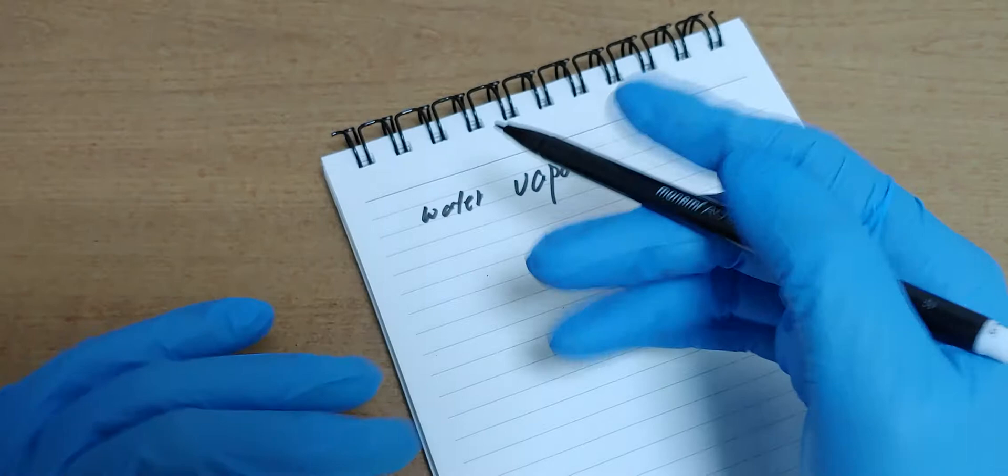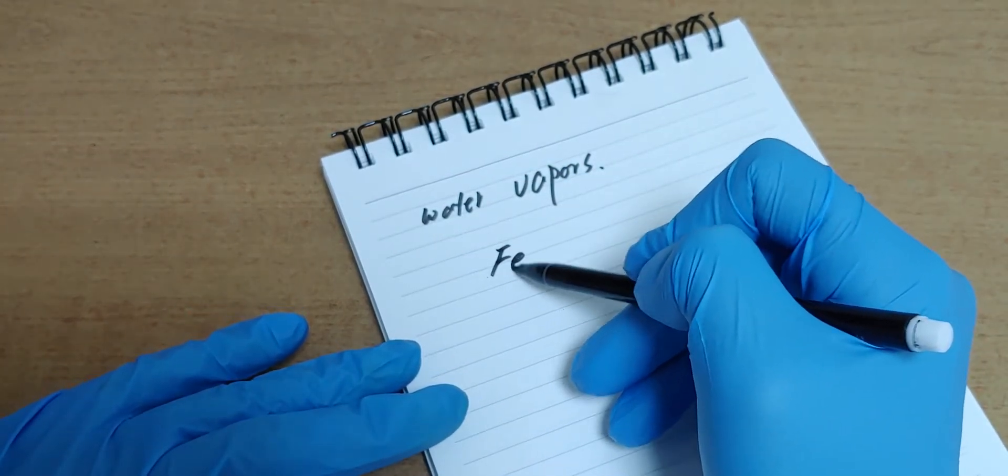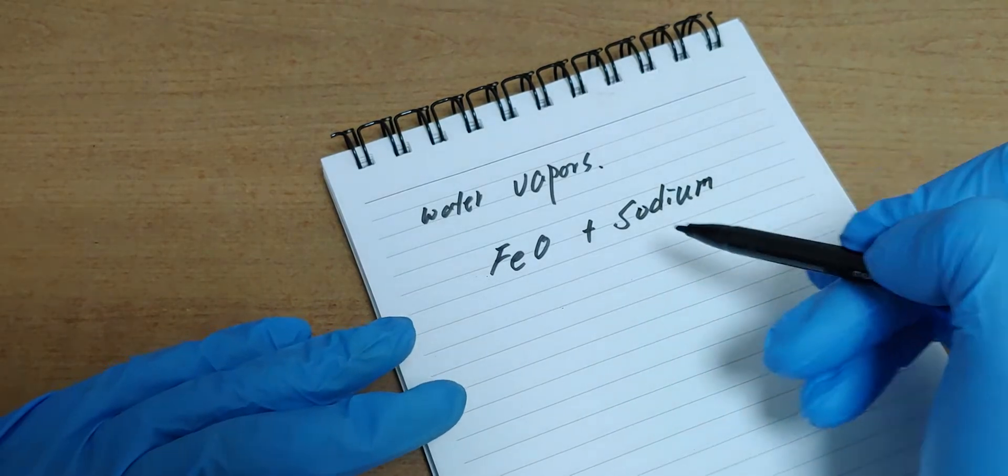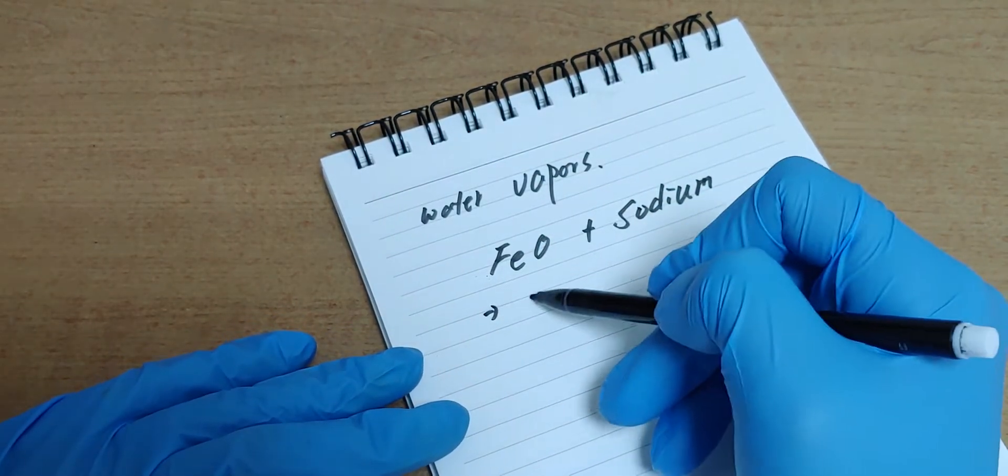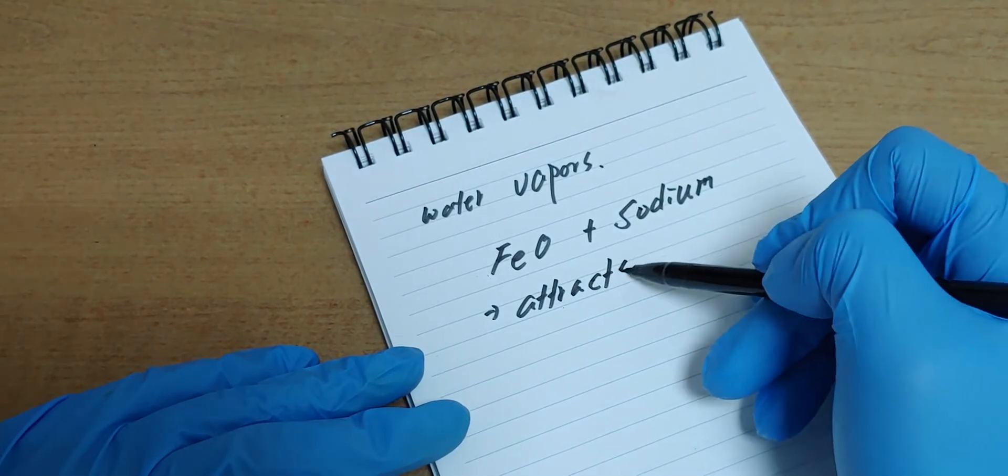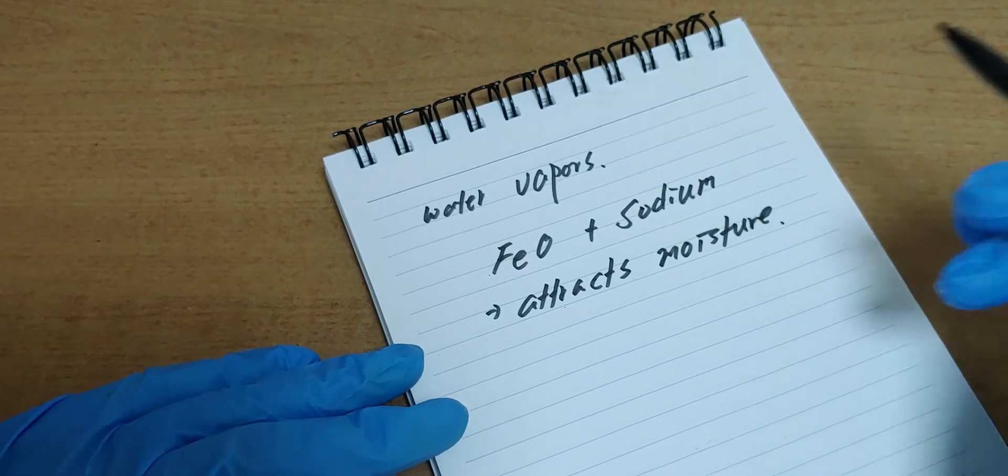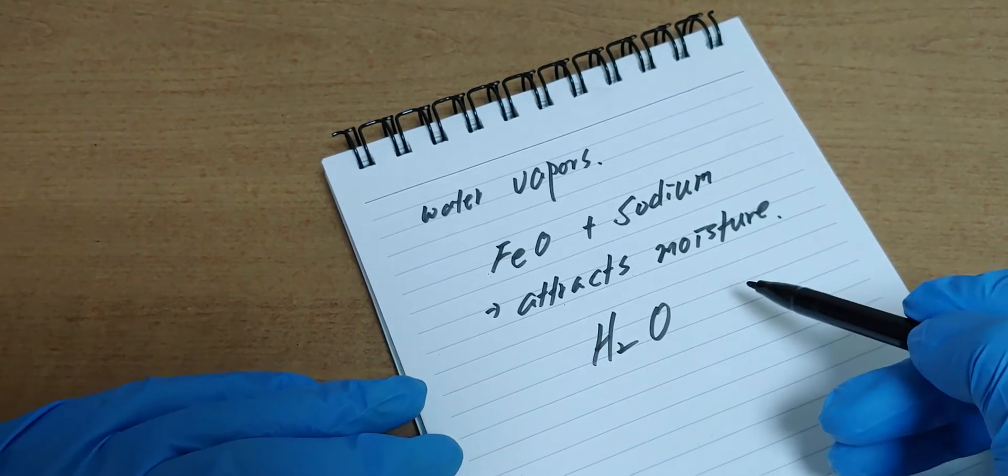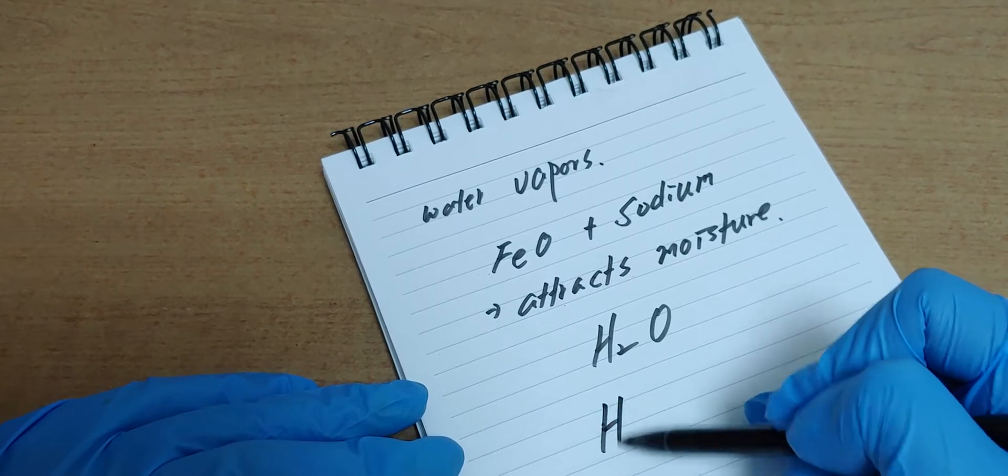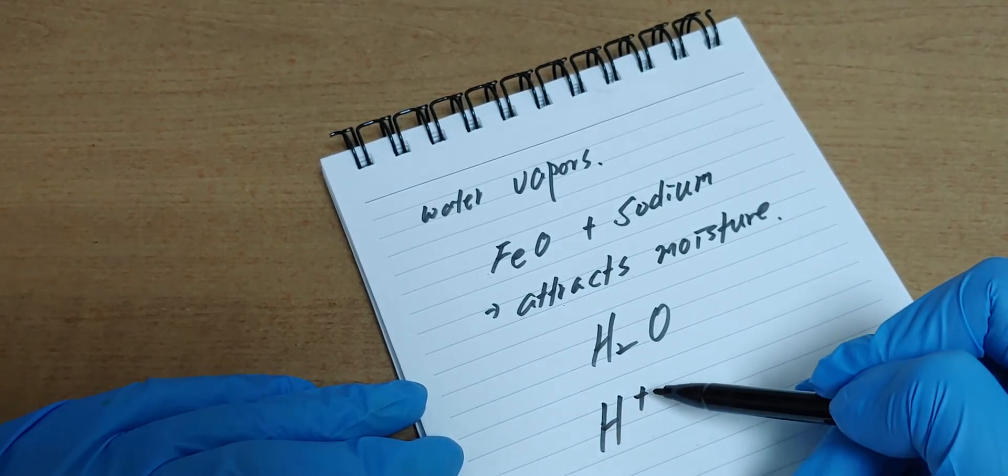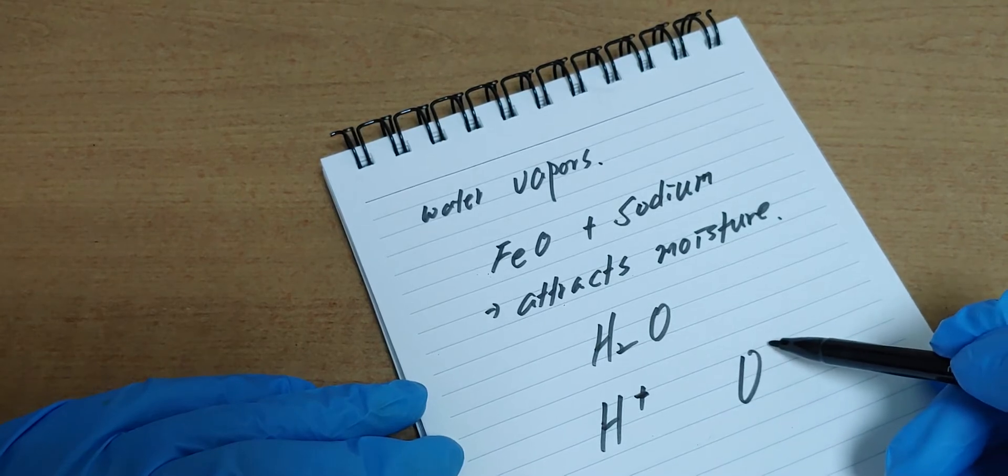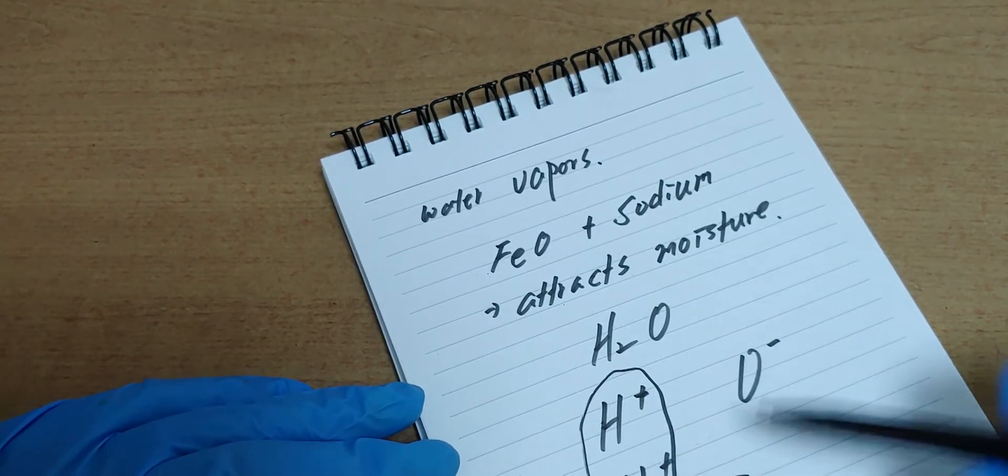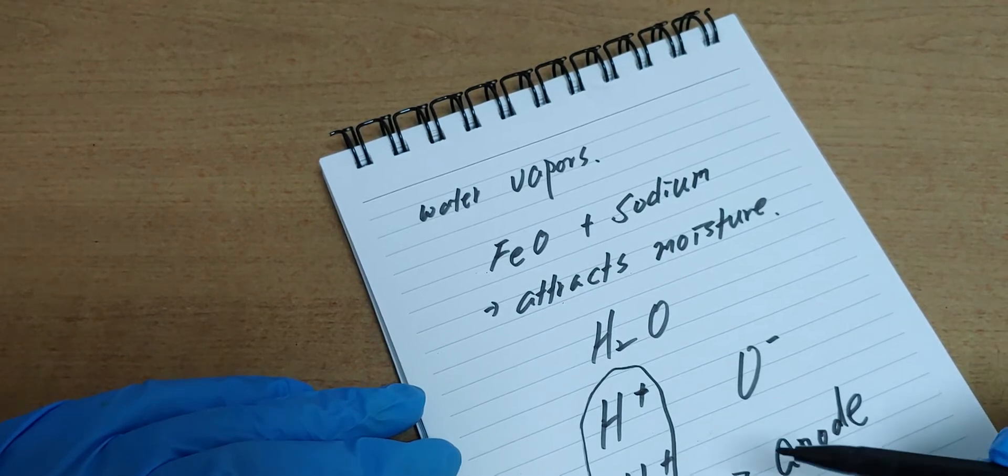So whenever I make electrodes by using iron oxide and sodium, it attracts moisture. As you know, water is H2O and then it is separated into hydrogen ion and oxygen ion. Hydrogen ion will add to anode and then spoil the battery.